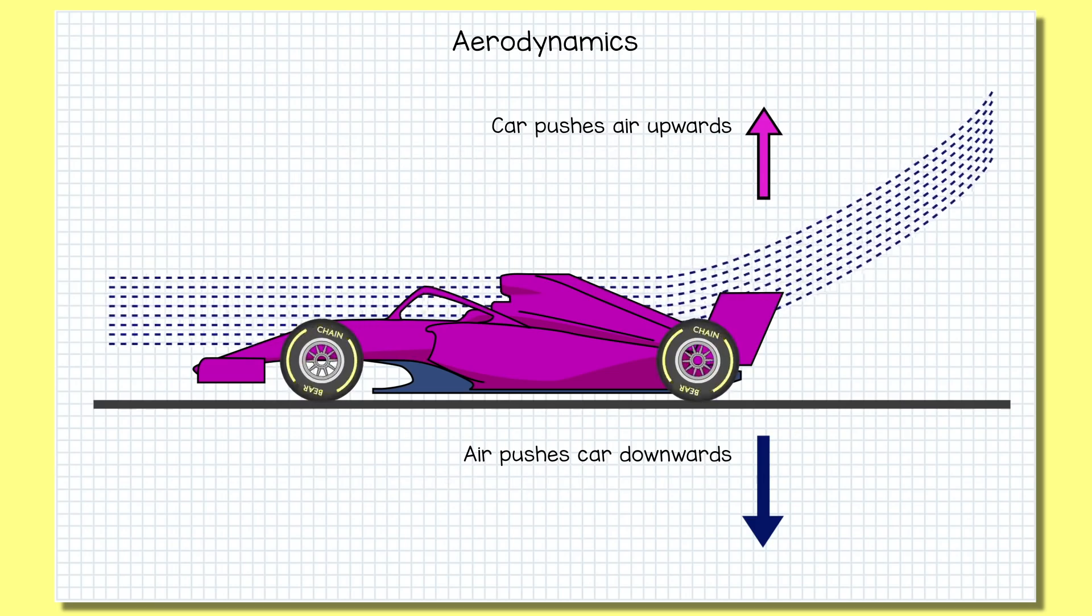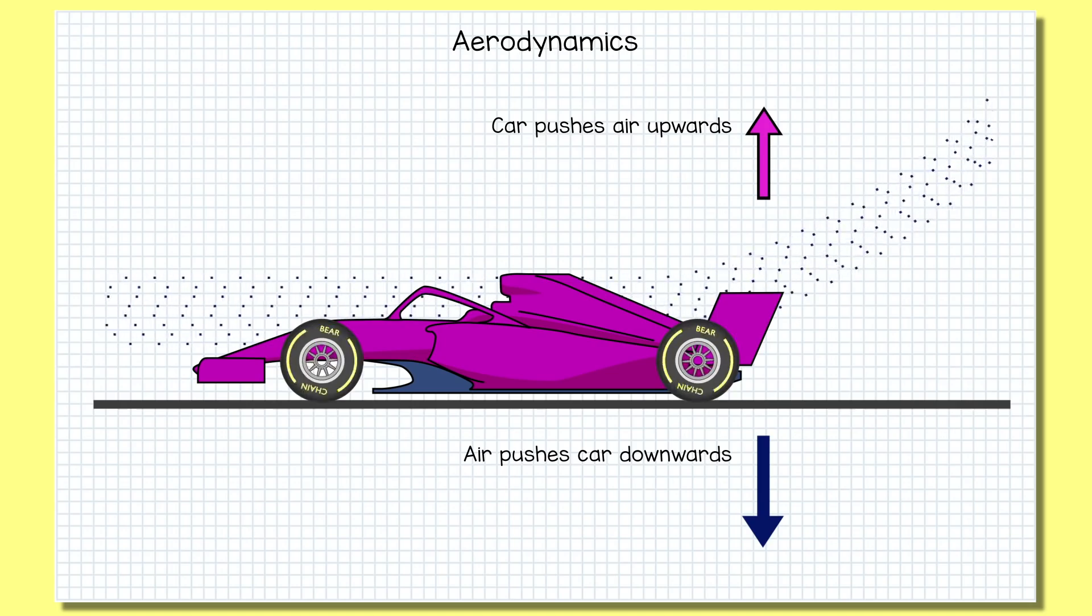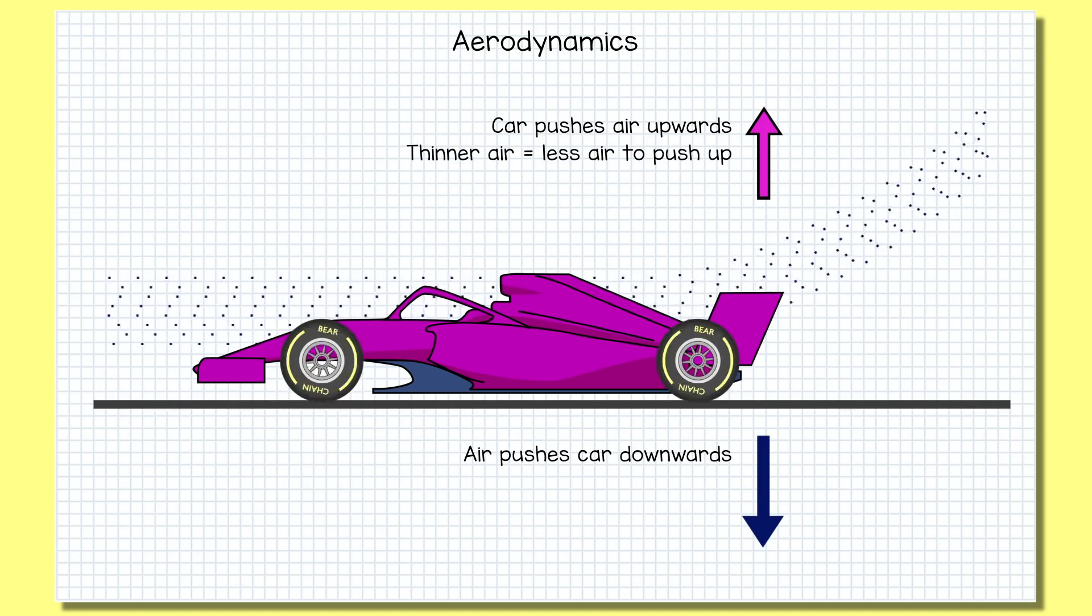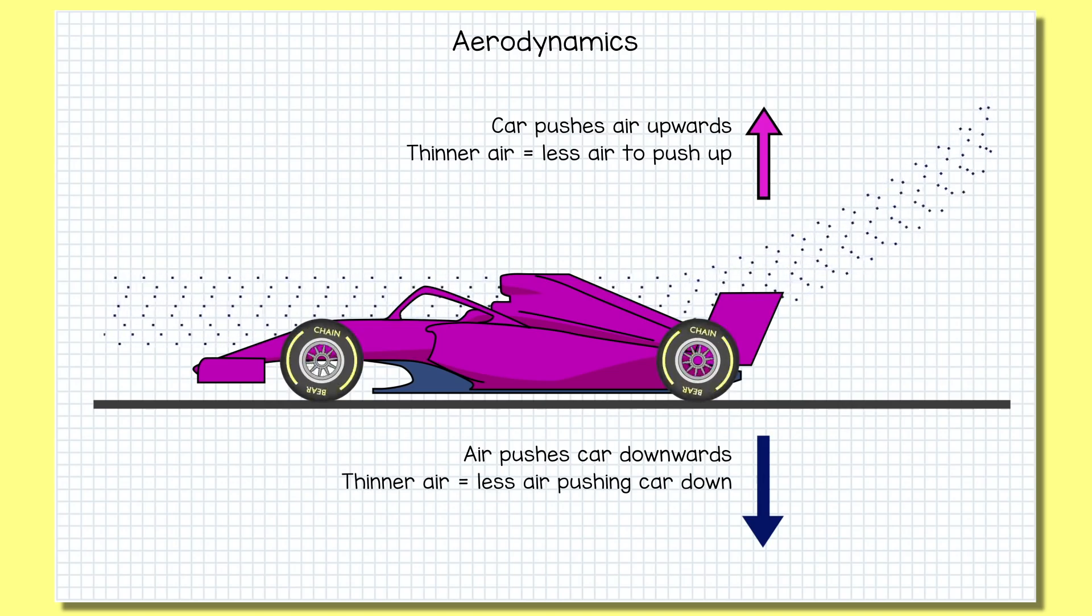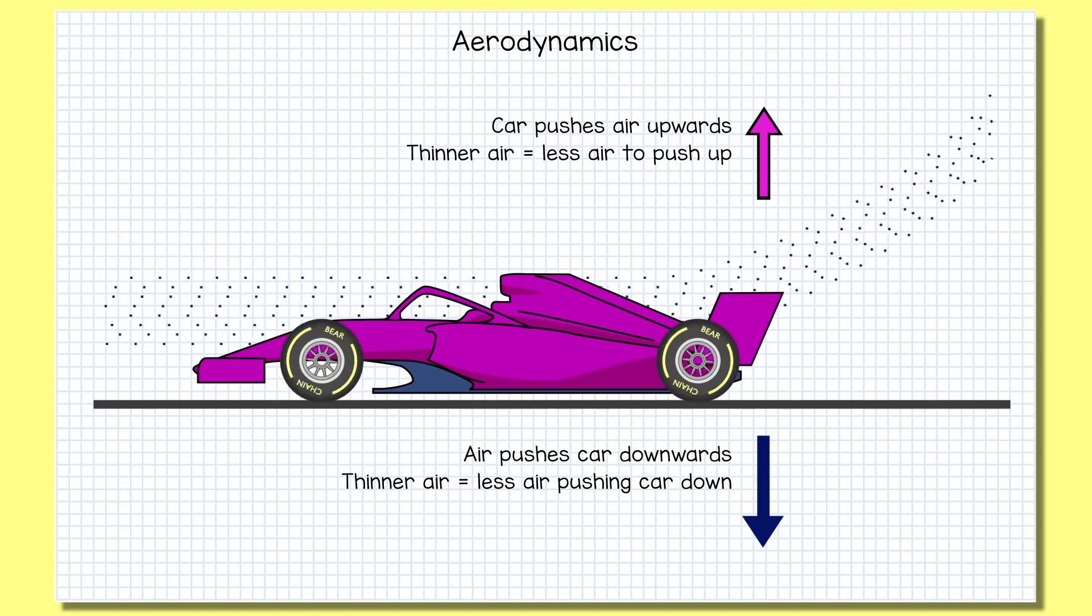At higher altitudes there's a lot less air in the atmosphere. In Mexico, there's about 26% fewer air molecules available to push against, so there's less air available to push back. So you can jack the wings right up, but you're just not going to capture the same downforce levels as you can down below where the air is thick and heavy with molecules.